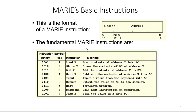Here's the list of fundamental MARIE instructions. You can go to the website of the MARIE simulator to get more detail on those instructions. Basically, the first one — binary 0001, which is hexadecimal 1 — represents LOAD X. X is represented by the address bits, and LOAD is represented by the 4-bit opcode. This loads the value at address X into the AC register.